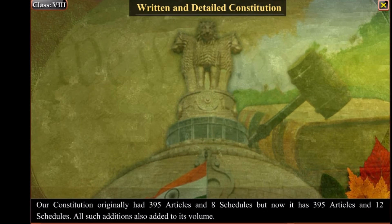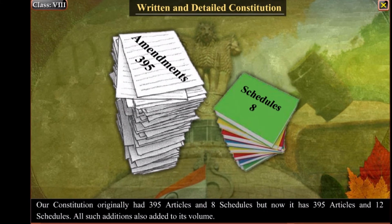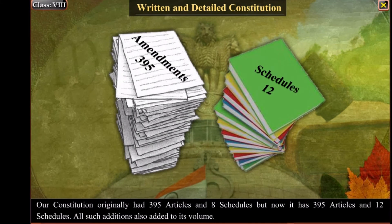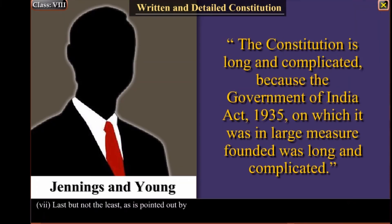Our constitution originally had 395 articles and 8 schedules, but now it has 395 articles and 12 schedules. All such additions also added to its volume. Last but not the least, as pointed out by Jennings and Young, the constitution is long and complicated because the Government of India Act 1935, on which it was in large measure founded, was itself long and complicated.